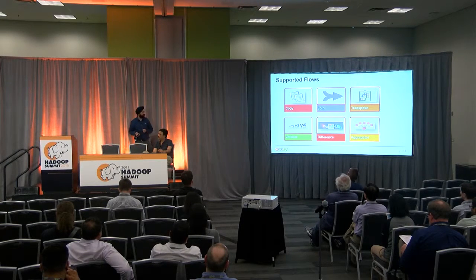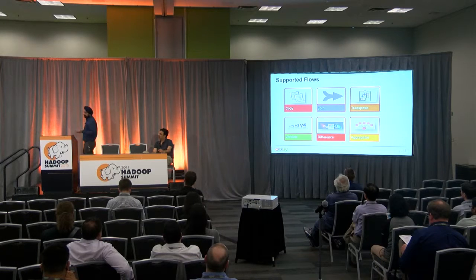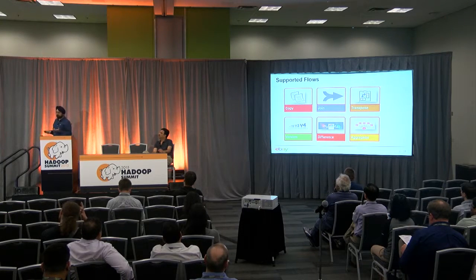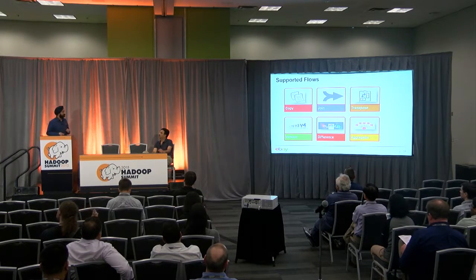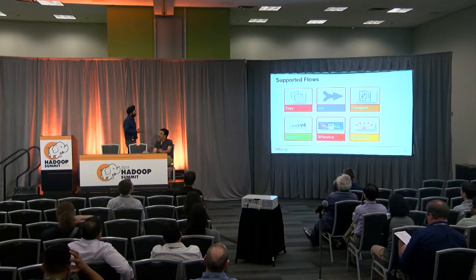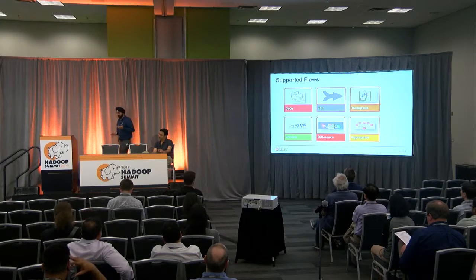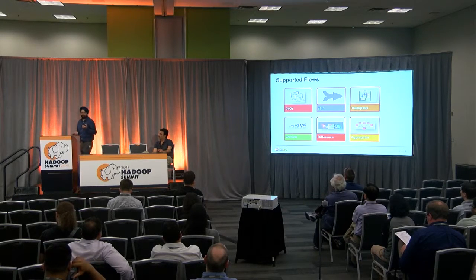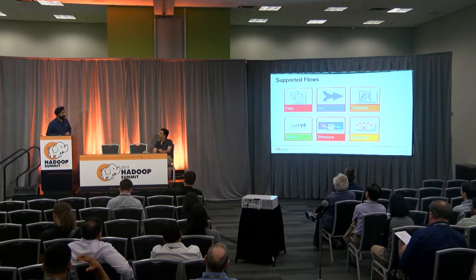Diff calculation in Hadoop is difficult, so we came up with a difference flow. Aggregator is in beta testing right now — basically on a particular key it can group the data up. Those are the flow components we have.